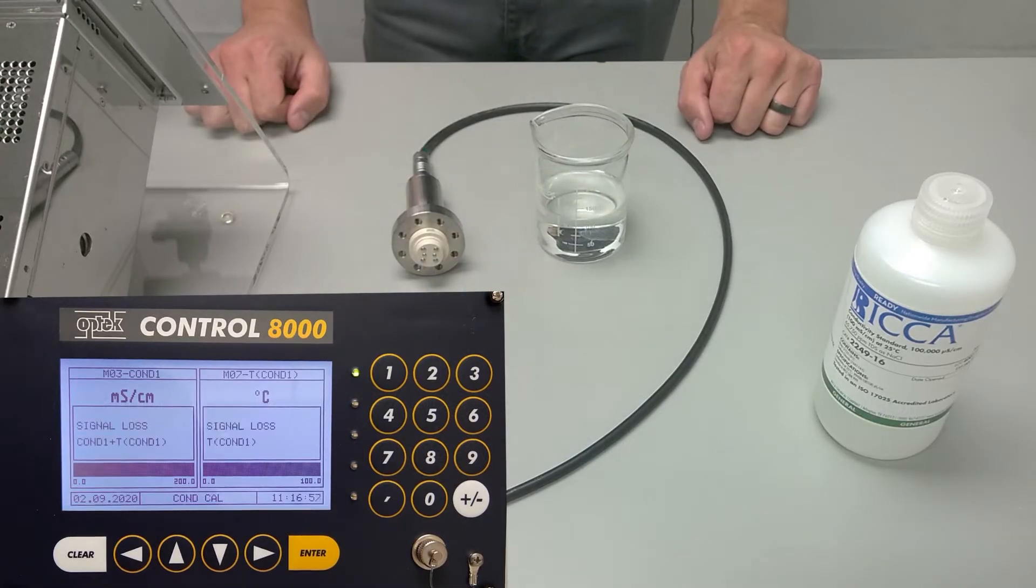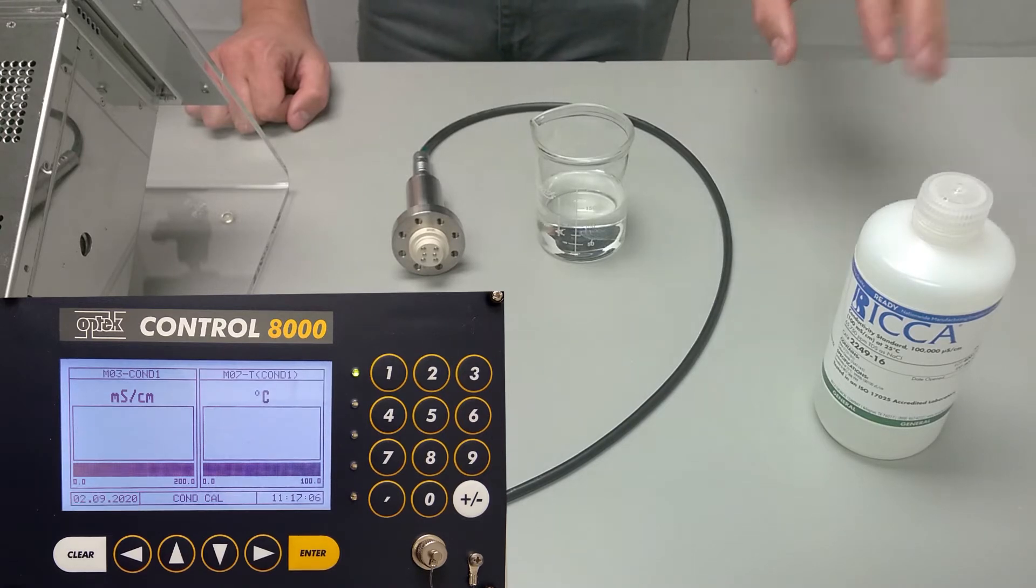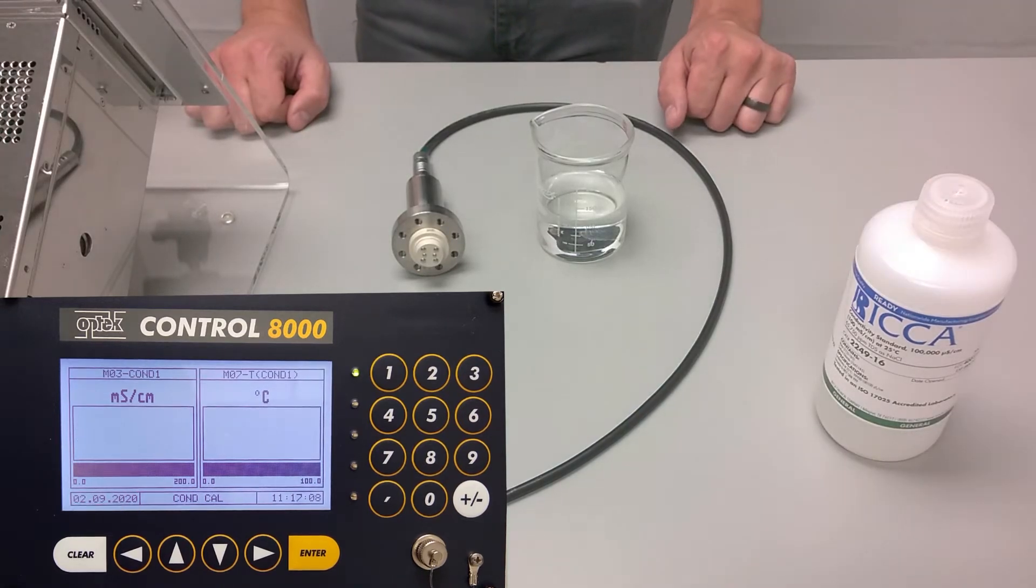In this video, we are going to perform a single point conductivity calibration using an Optech C8000 transmitter and an ACF60 conductivity sensor. In addition to the hardware, we will also need a conductivity solution. We use a RICCA 100 millisiemens standard.